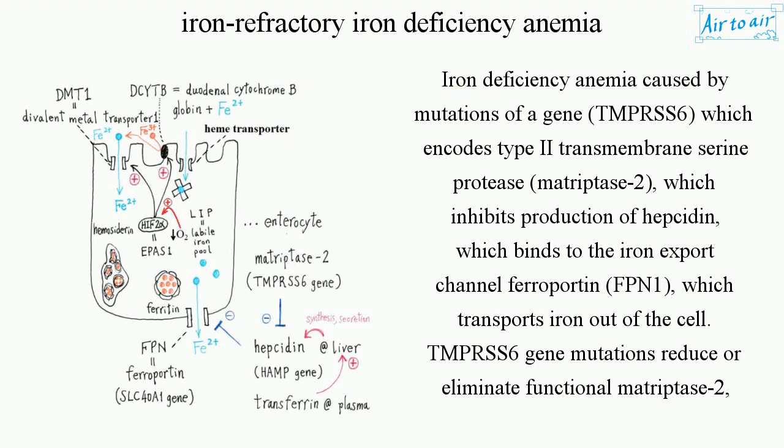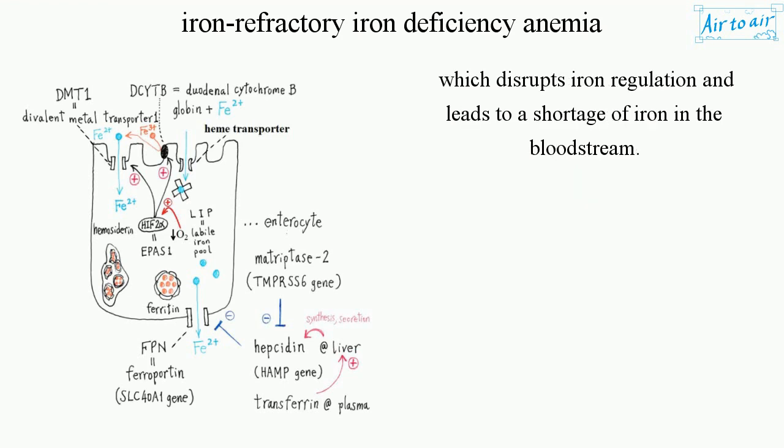Iron Deficiency Anemia caused by mutations of a gene TMPRSS6, which encodes the type II transmembrane serine protease Matriptase-2, which inhibits production of hepcidin. Hepcidin binds to the iron export channel ferroportin (FPN1), which transports iron out of the cell. TMPRSS6 gene mutations reduce or eliminate functional Matriptase-2, which disrupts iron regulation and leads to a shortage of iron in the bloodstream.